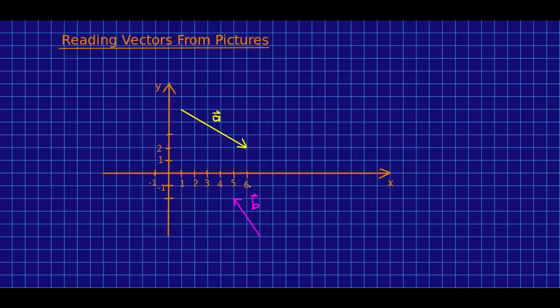Here are a couple of vectors and here are some axes and I haven't even put units on because perhaps these are abstract vectors. How do you read these vectors off of the pictures? Let's start with this a.